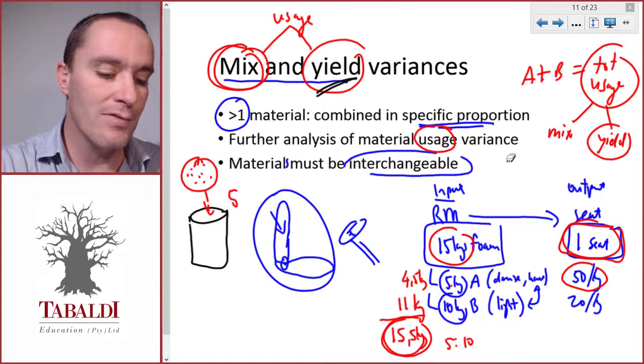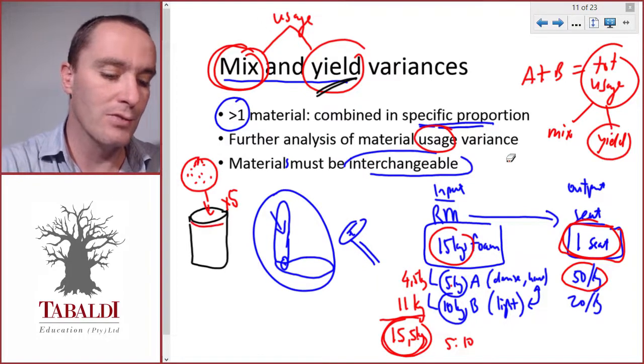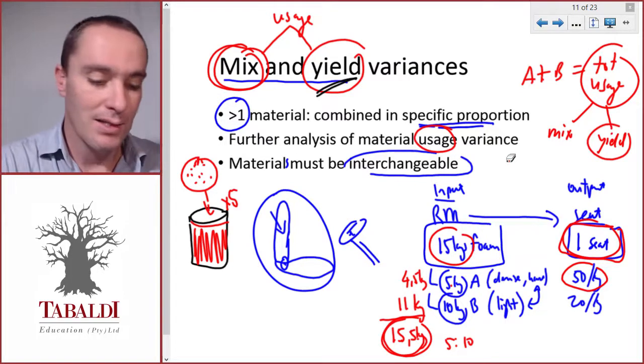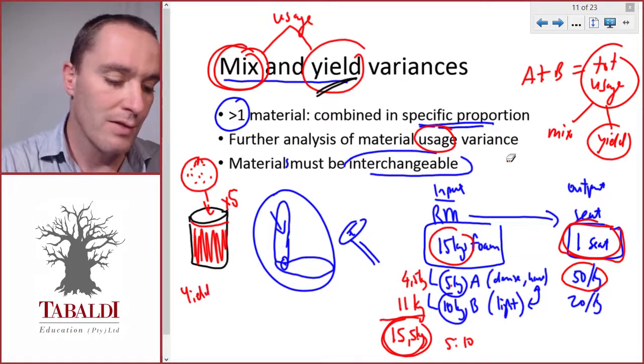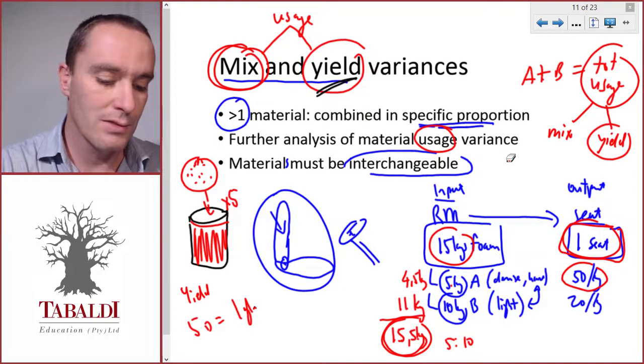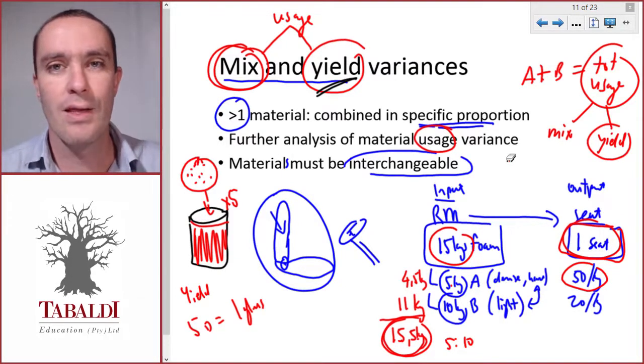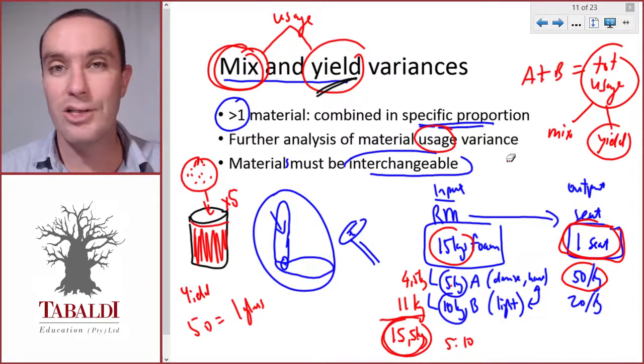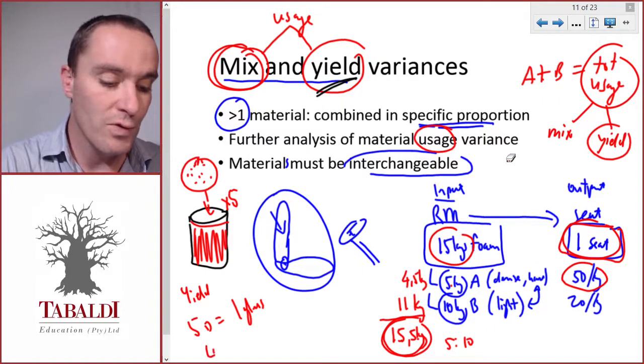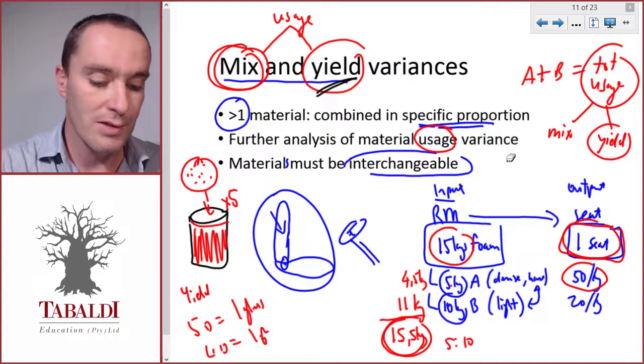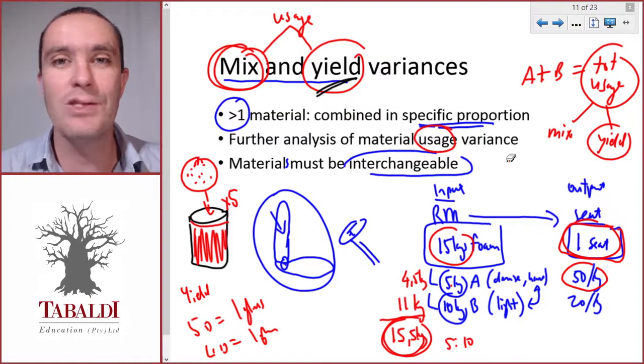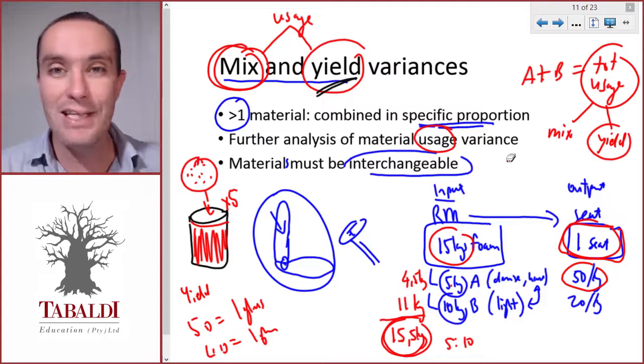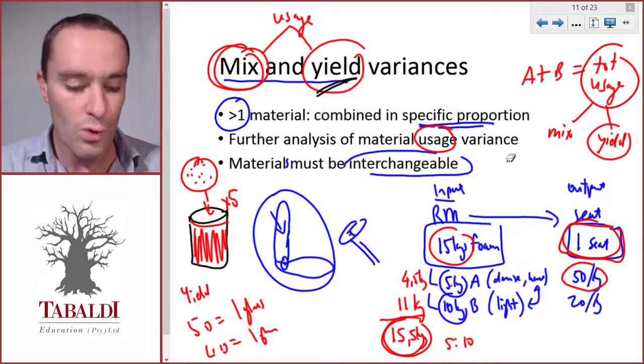And we end up squeezing 5 oranges to fill the glass. So we have a standard yield of 5 oranges equals 1 glass of orange juice. If we now use oranges from a different area and only use 4 oranges to fill the glass, what does that mean in terms of yield? It means we yielded more juice per orange - less input for the same amount of output.